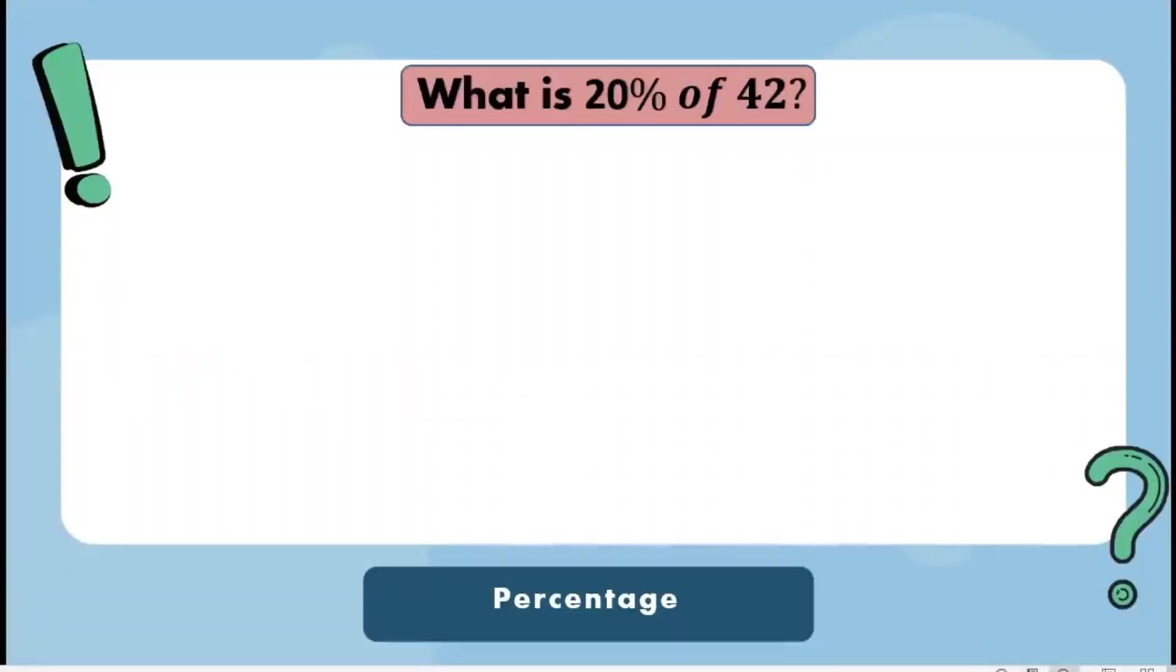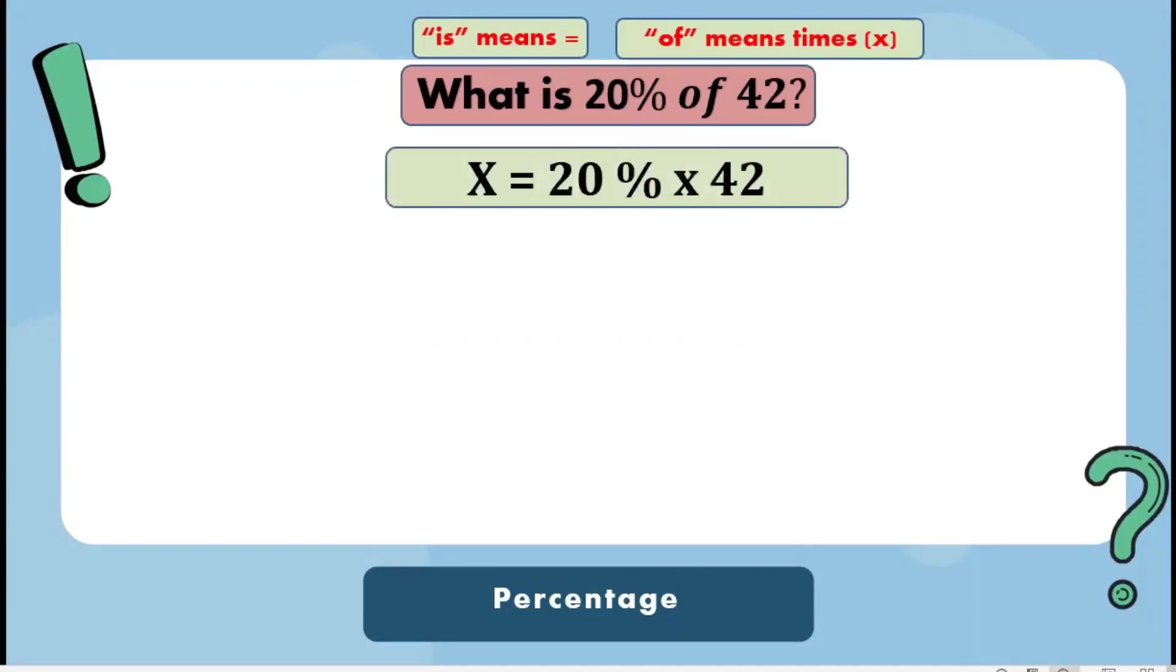What is 20% of 42? Let's convert first the problem into equation. Remember, is means equal, of means times. We can write it as x equals 20% times 42. Let's solve it.